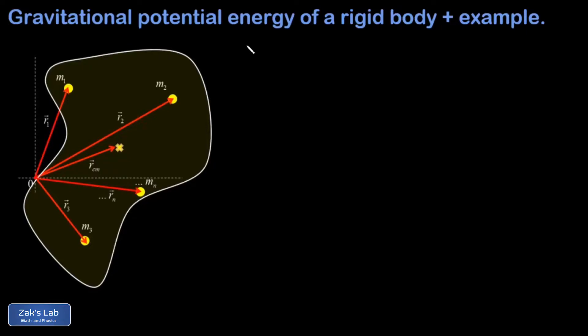In this video we quickly derive a formula for the gravitational potential energy of a rigid body and then we apply the formula to an example. So we start by looking at a rigid body and any rigid body can be broken into point masses.